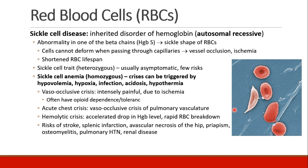Patients who are homozygous for hemoglobin S have sickle cell anemia. Patients with sickle cell disease can have crises triggered by things commonly encountered in the perioperative setting, including hypovolemia, hypoxia, infection, acidosis, and hypothermia. Examples of sickle cell crises include the vaso-occlusive crisis, which is an intensely painful sensation in a part of the body due to ischemia as these cells sickle.